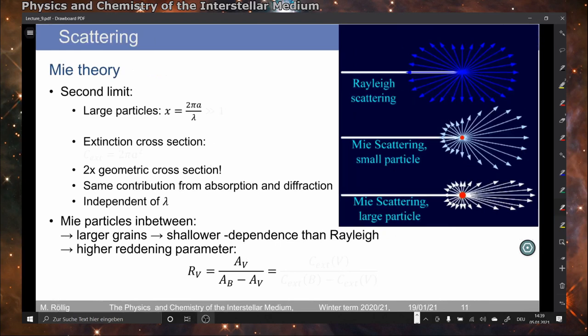The second limit is not that of very small but that of very large particles, so x much larger than 1. In this case, the extinction cross-section is just 2πa², which is 2 times the geometric cross-section of our spherical particles. So we can say that the absorption and the diffraction contribute equally to the full extinction independently of the wavelength.